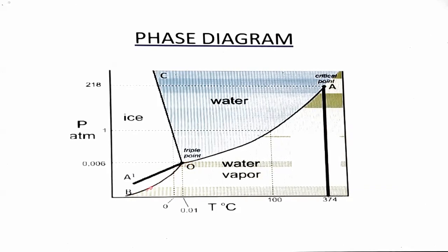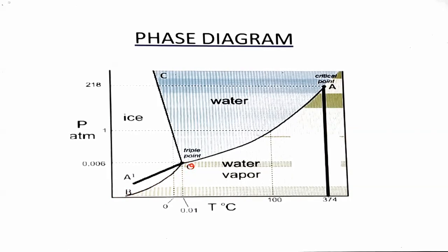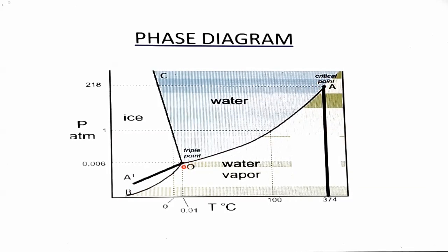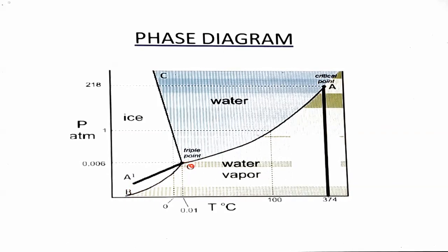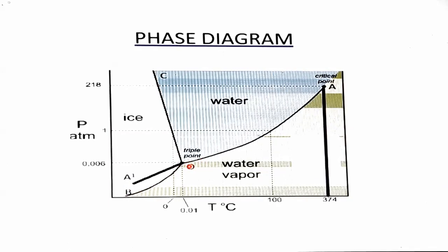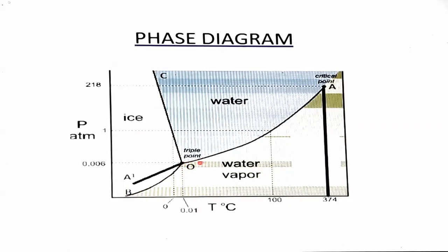In the water system, we will see the curves first. We have three curves: the AO curve, the BO curve, and the OC curve. All three curves meet at a particular point, which is called the triple point.